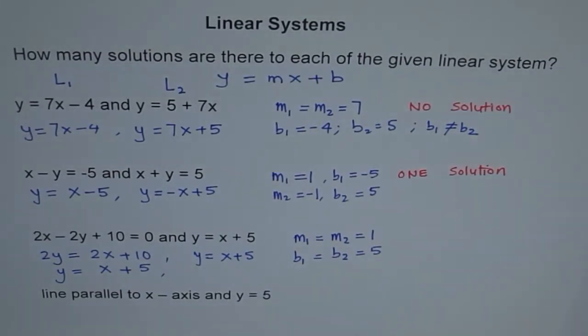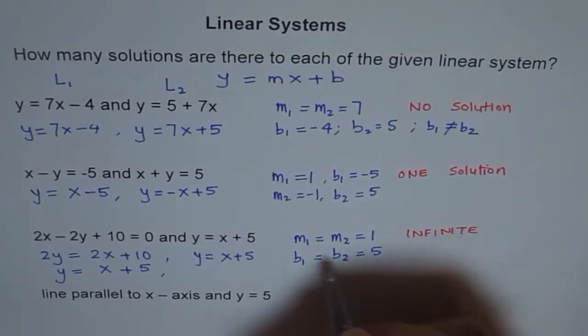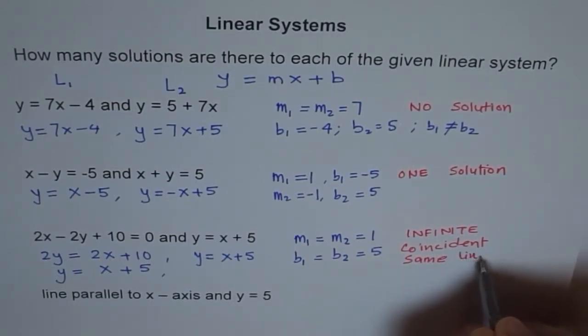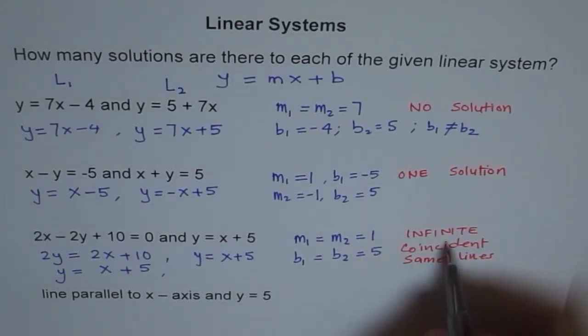So how many solutions do we expect here? Infinite. Why so? We call such lines as coincident. They are practically the same lines, one over the other. So here, they intersect at every point. Every point is common to them. So they have infinite solutions.